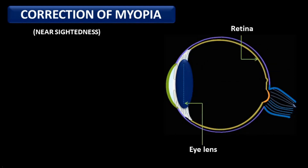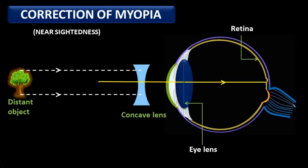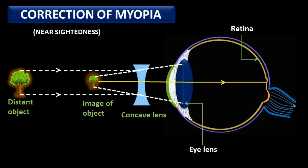Correction of myopia: to correct myopia, a suitable concave lens is used. Rays coming from the distant object are firstly diverged by the concave lens and form a virtual image of the distant object at the far point. Then, the image of this virtual image is formed on the retina. So, by using a suitable concave lens, we can correct myopia.